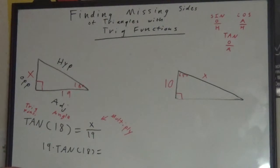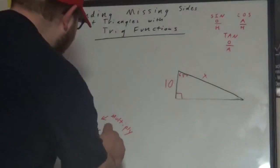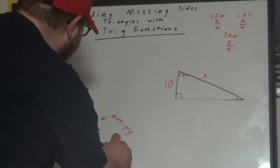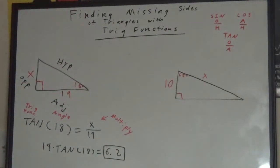We want you to put that in a calculator. Now, since I don't have a calculator on me, I already have the answer that I found. I think it gives us approximately 6.2. 19 times tangent 18 equals 6.2.